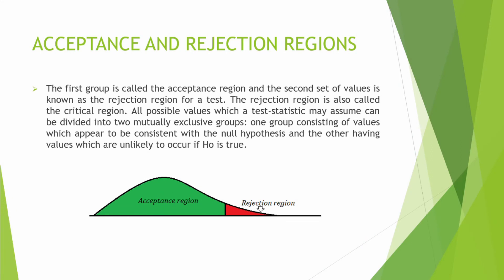The next topic is acceptance and rejection regions. All possible values which a test statistic may assume can be divided into two mutually exclusive groups. The first group is called the acceptance region — values that appear consistent with the null hypothesis. The second group is the rejection region, also called the critical region — values unlikely to occur if H0 is true.